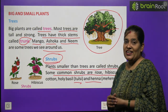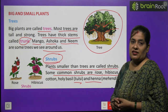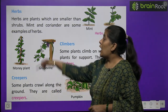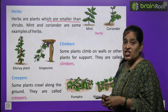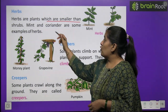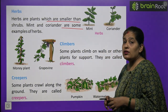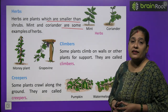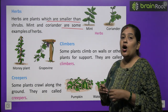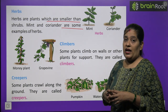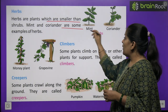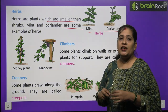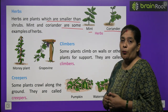Now we will learn about herbs. Herbs क्या होते हैं? Herbs are plants which are smaller than shrubs. Mint and coriander are some examples of herbs. Shrubs से छोटे पौधे जो होते हैं उन्हें herbs कहते हैं। ये हरे रंग के होते हैं और इनका तना बहुत मुलायम होता है — जैसे mint मतलब पुदीना और धनिया। ये बहुत पत्तीदार, छोटे और कोमल पौधे होते हैं।